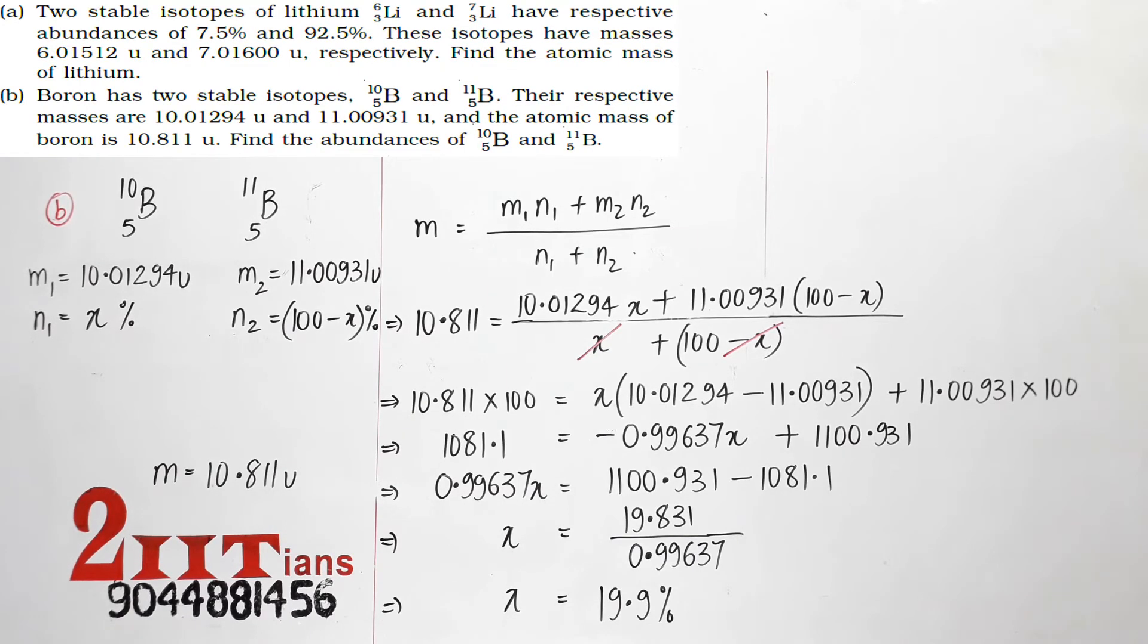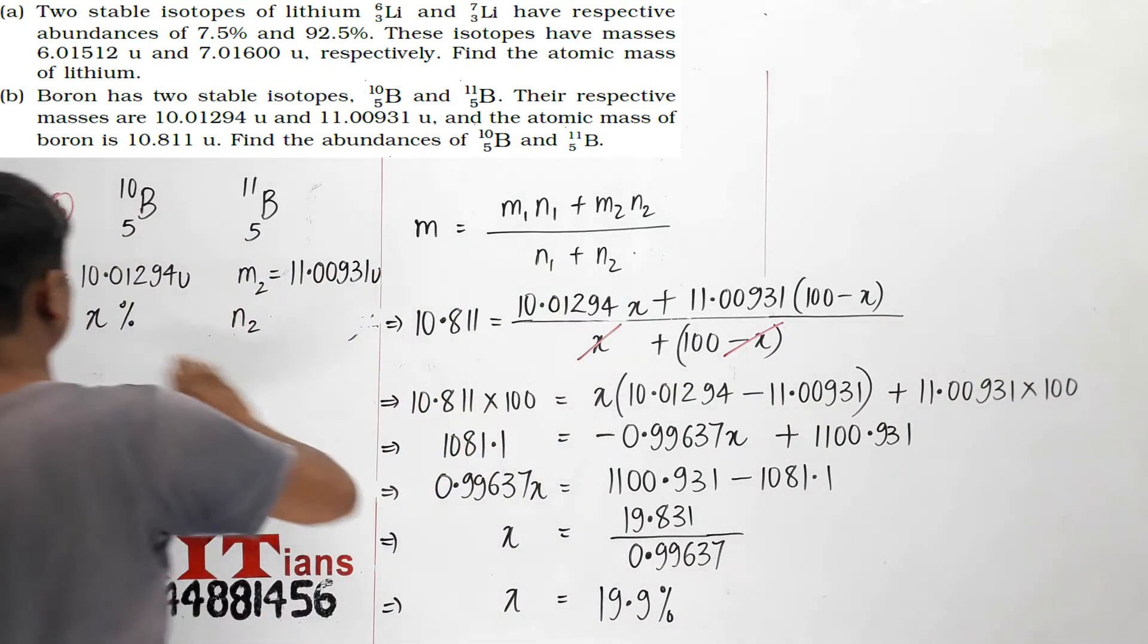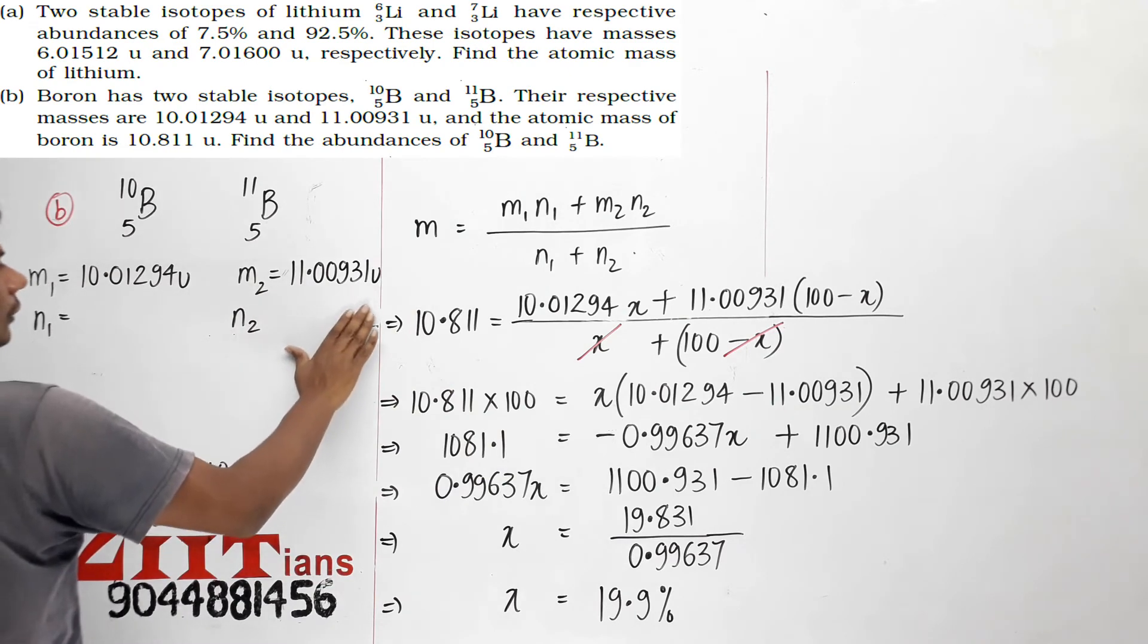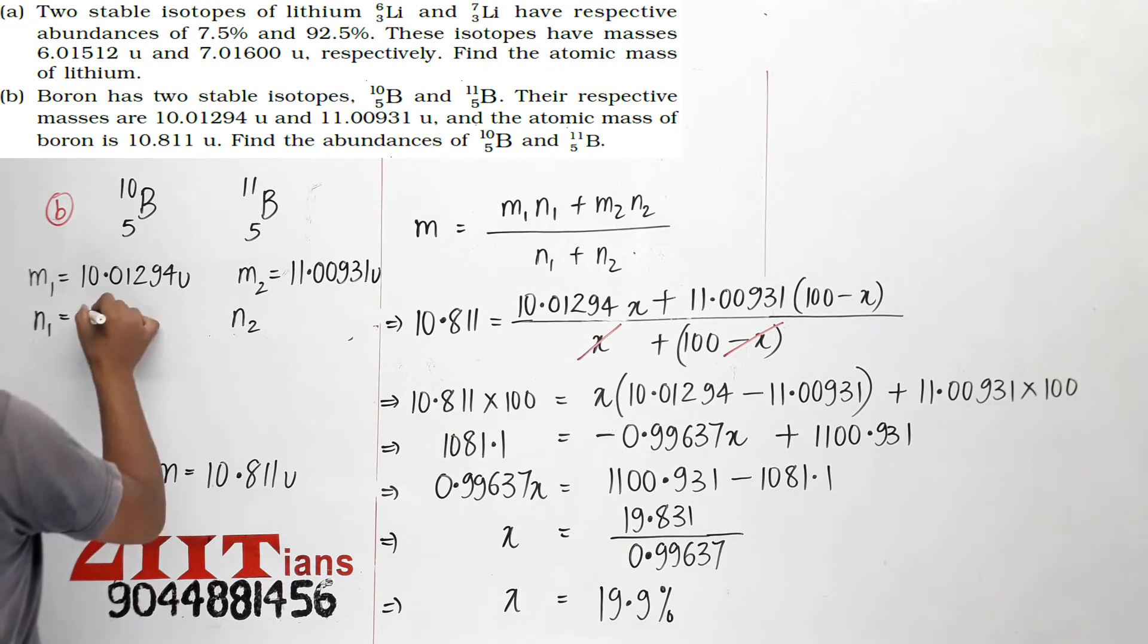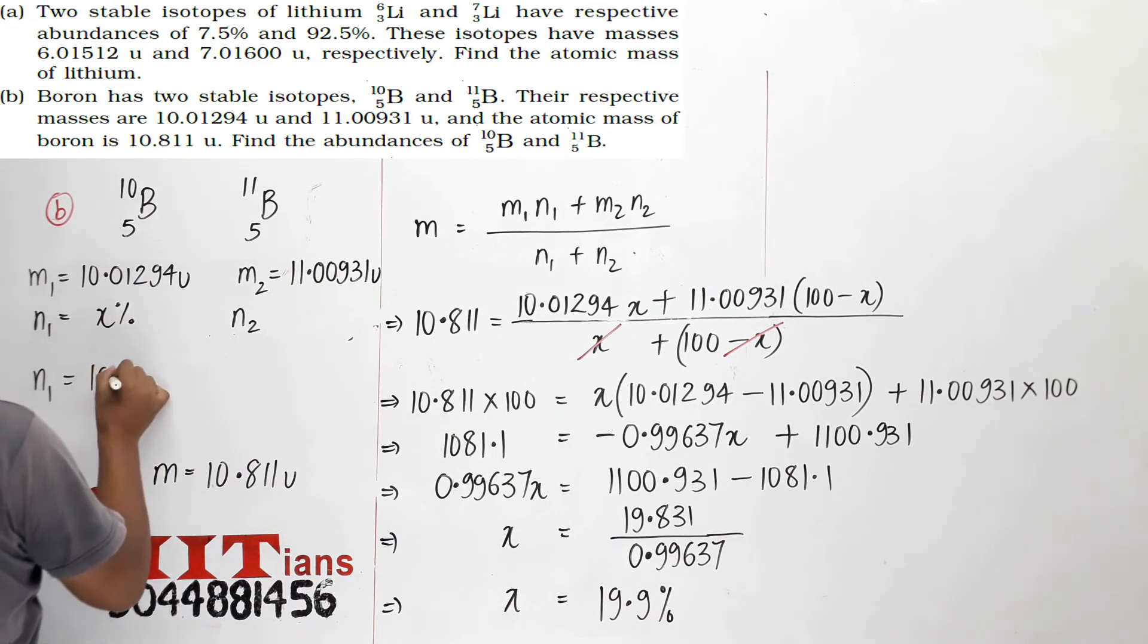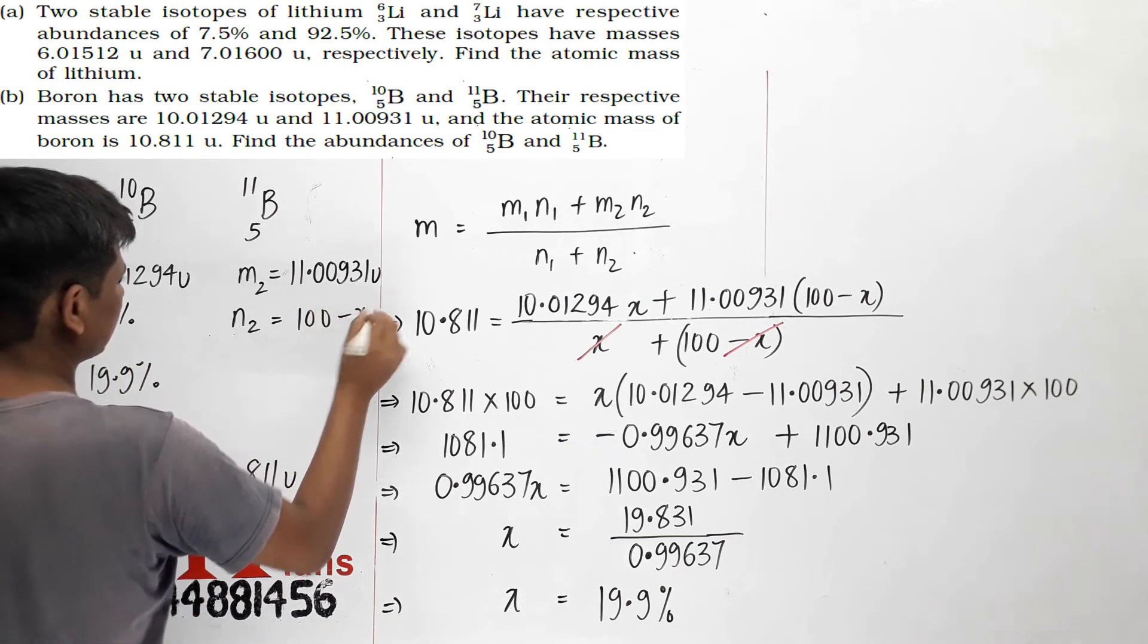This comes out to 19.9 percent. So this one will be X percent, which is 19.9 percent, and this is 100 minus X percent.